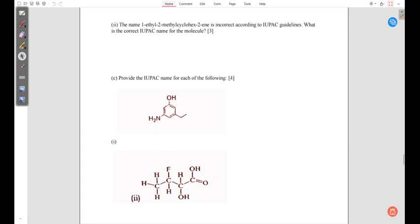For B2, we're told the name 1-ethyl-2-methyl cyclohexene is incorrect according to the IUPAC guidelines. What is the correct IUPAC name for the structure? I actually tried renaming this. We need to draw it.